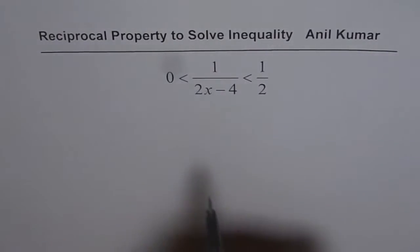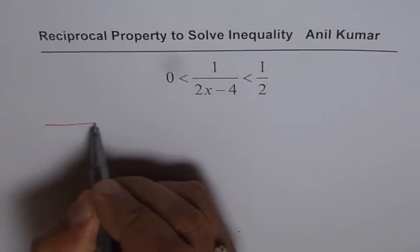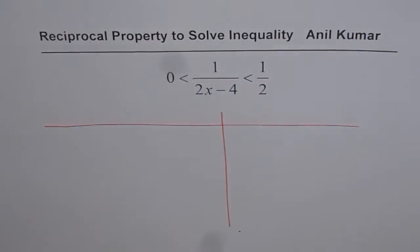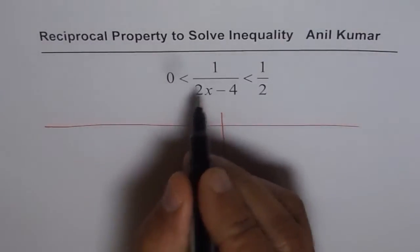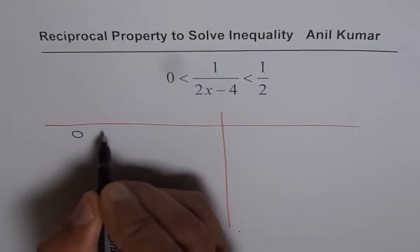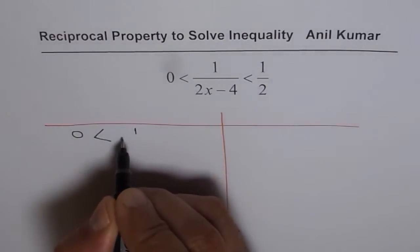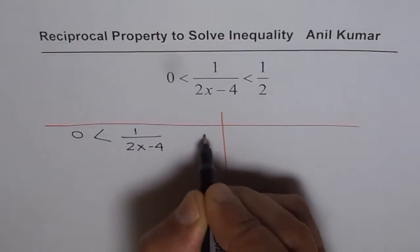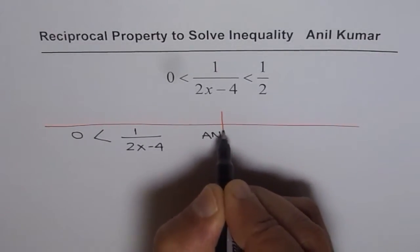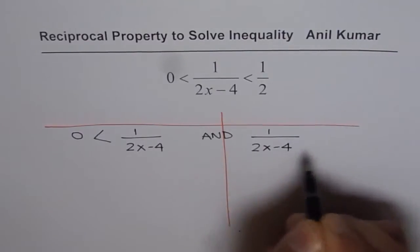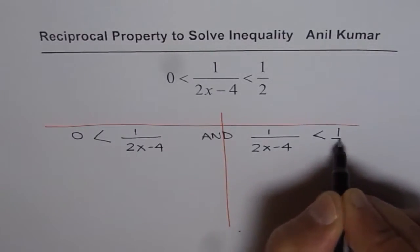To solve this, we can break this up into two parts and apply an AND condition. This double inequality becomes: 0 < 1/(2x - 4) AND 1/(2x - 4) < 1/2.